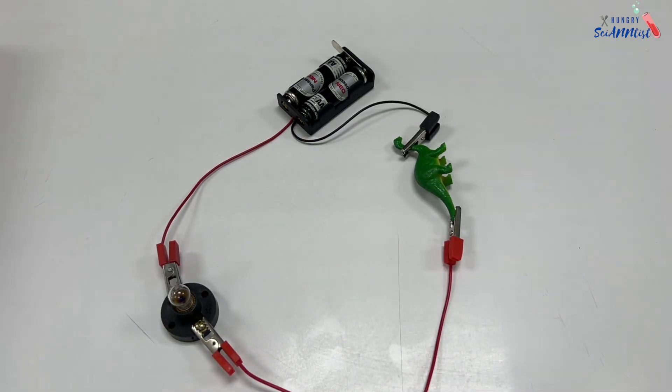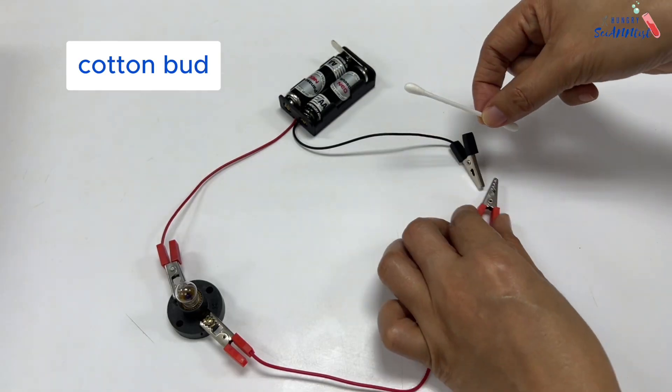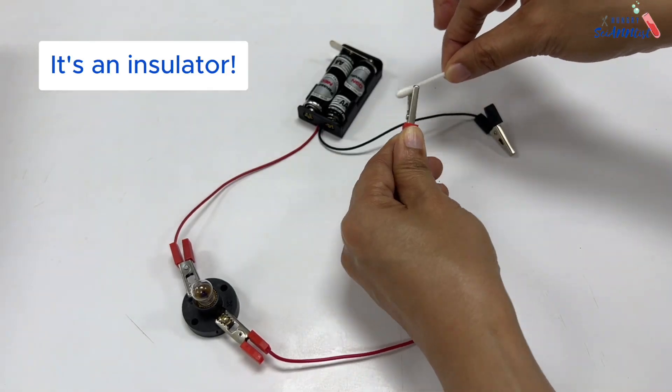A plastic toy is an insulator. A cotton bud is an insulator.